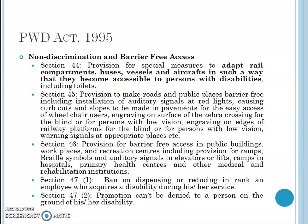Section 46 provides for barrier-free access in public buildings. All public offices, hospitals, railway stations, bus stations, airports, workplaces, and recreation centers should have ramps, Braille symbols — which allow blind people to read content — auditory signals in elevators or lifts, ramps in hospitals so that wheelchairs can be used, and similar facilities at primary health centers and other medical and rehabilitation institutions.